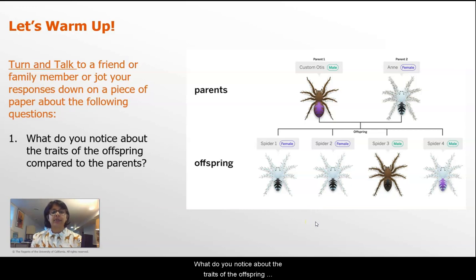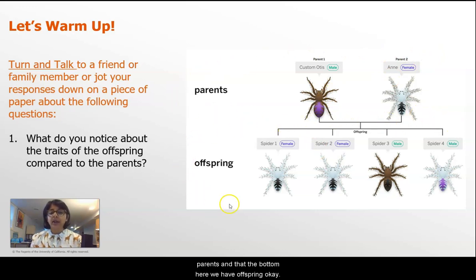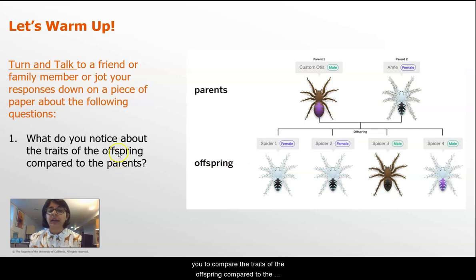What do you notice about the traits of the offspring compared to the parents? First, notice that this diagram is set up kind of like a family tree — on the top we have parents, and at the bottom we have offspring. This question is asking you to compare the traits of the offspring to the traits of the parents. So what do you notice there?